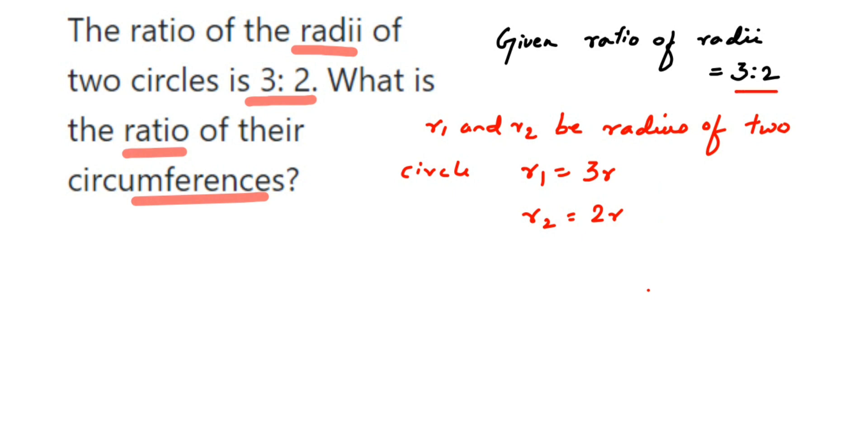And you know the circumference formula, right? Circumference formula is 2πr. So c1, suppose is the circumference of the first circle, then it will be 2πr1. And suppose c2 is the circumference of the second circle, then the formula will become 2πr2.